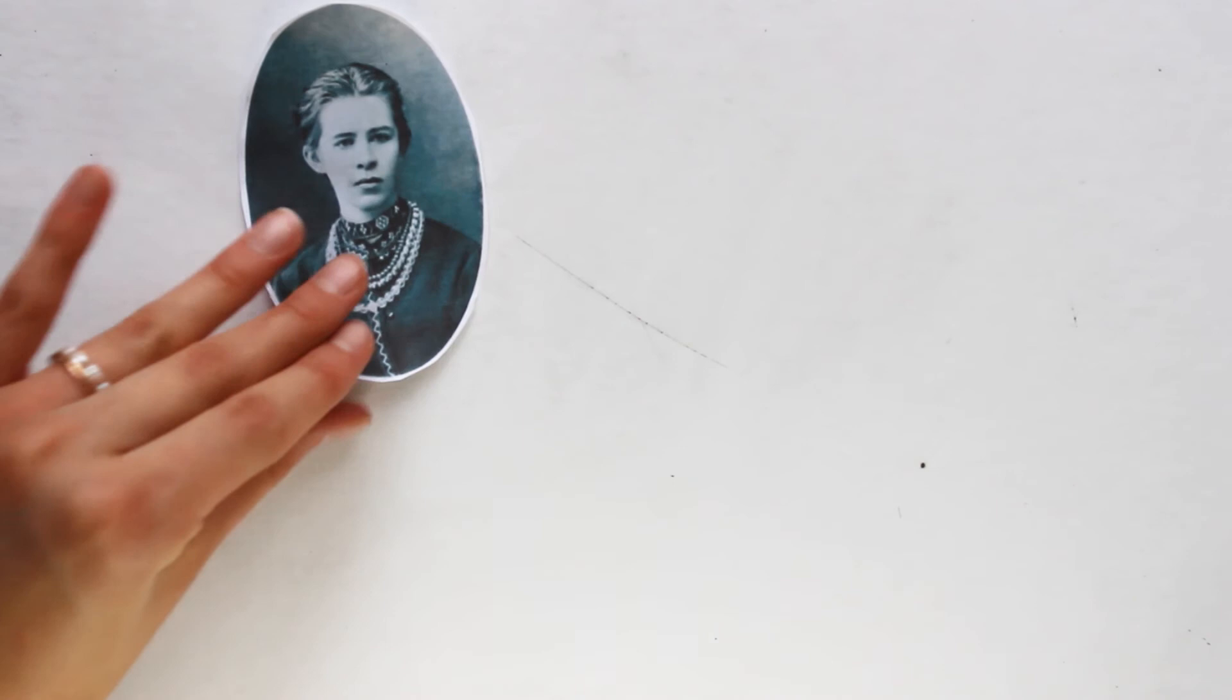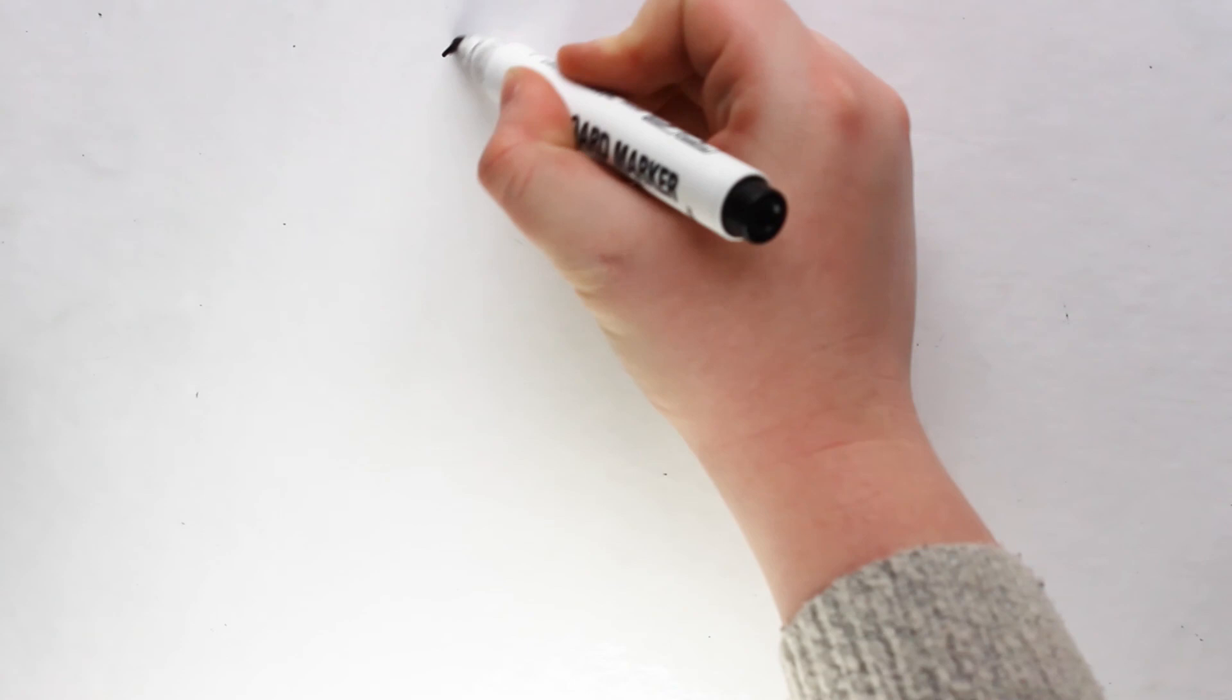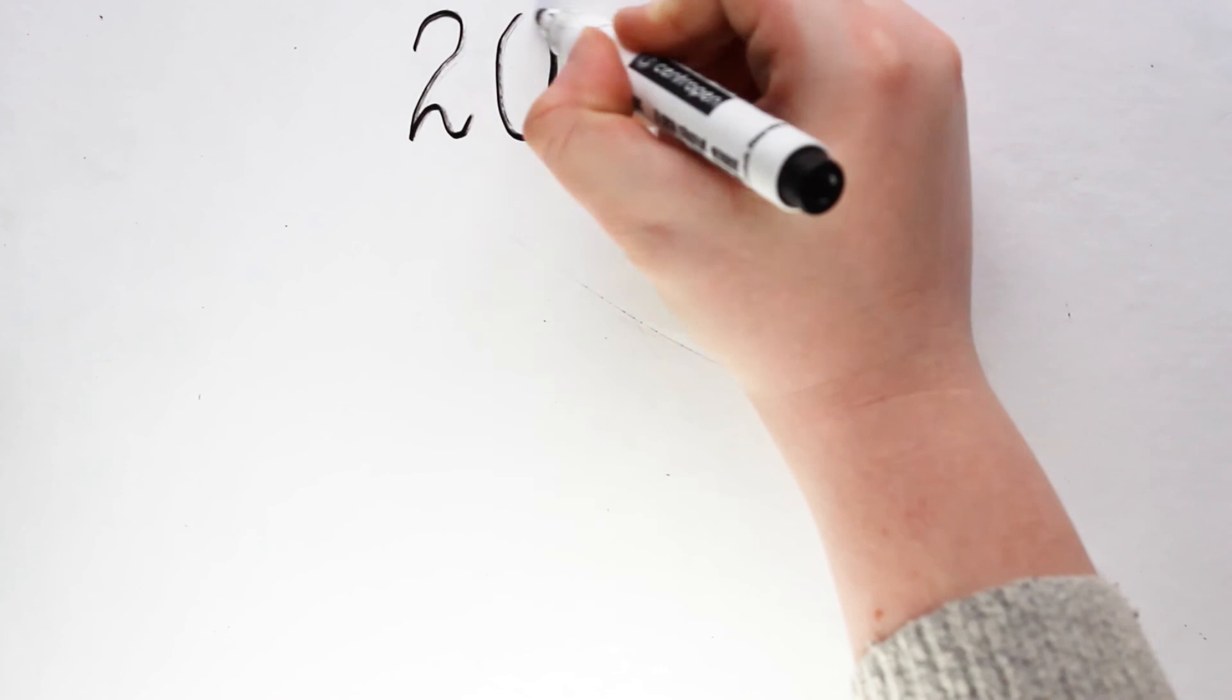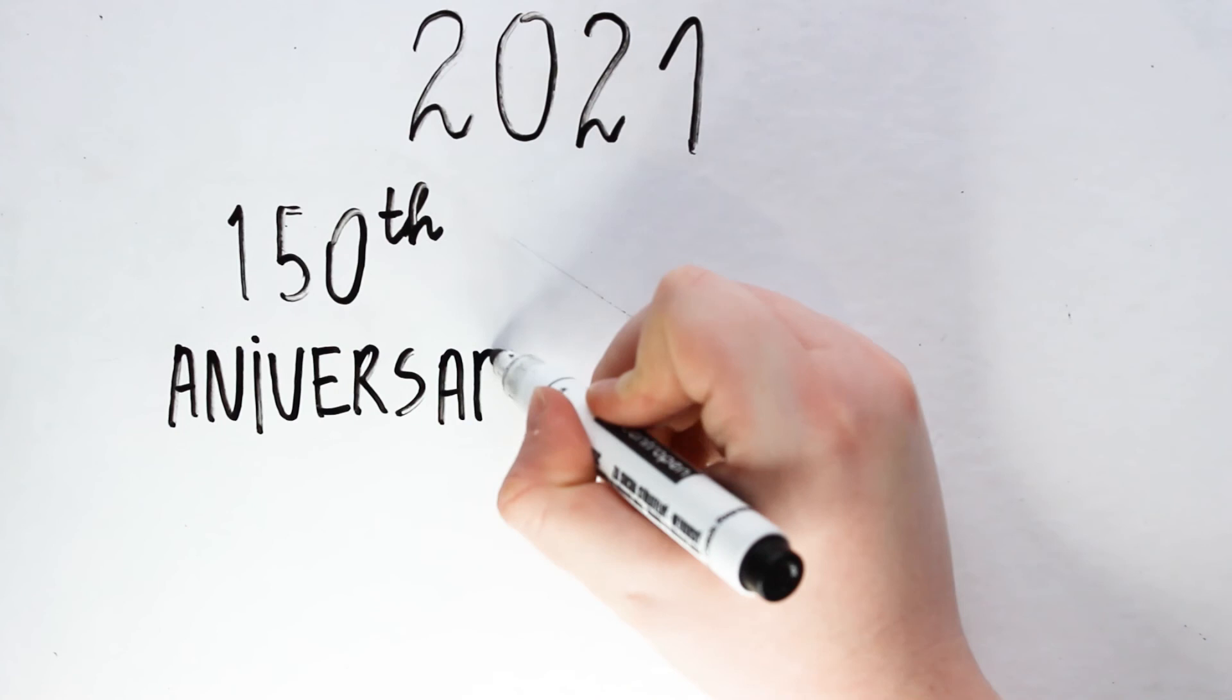The portrait of Lesya Ukrainka is placed on a 200 hryvnia banknote. A number of postage stamps have been designed in her honor. In 1971, by the decision of the international organization UNESCO, Lesya Ukrainka's birthday was celebrated all over the world. This year we have the opportunity to celebrate the 150th anniversary of one of the greatest writers of Ukraine.